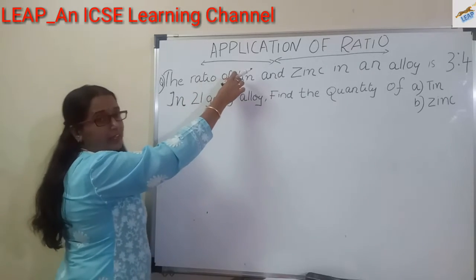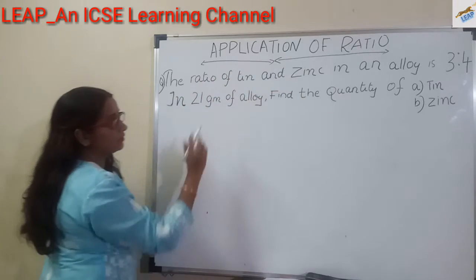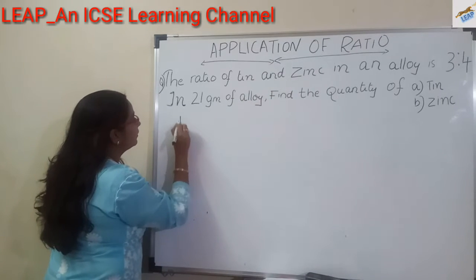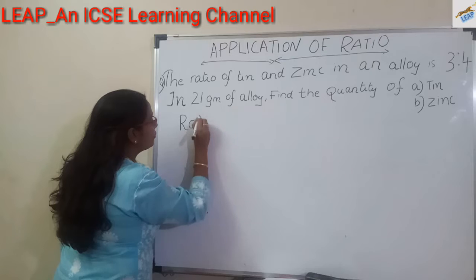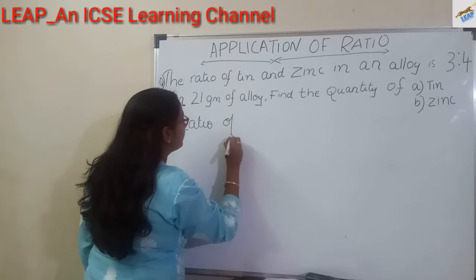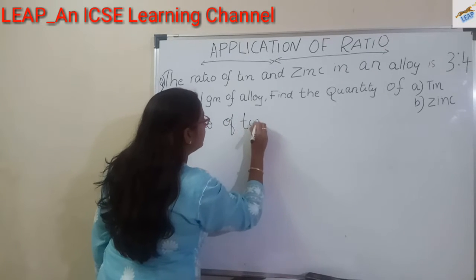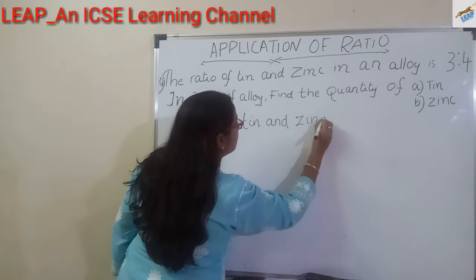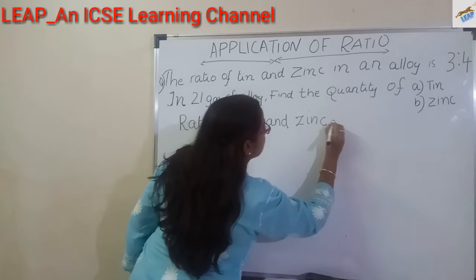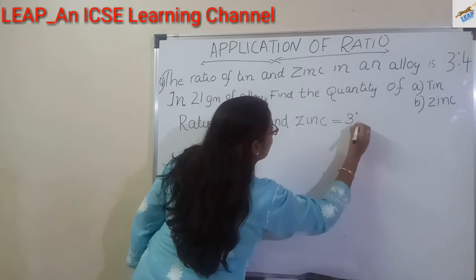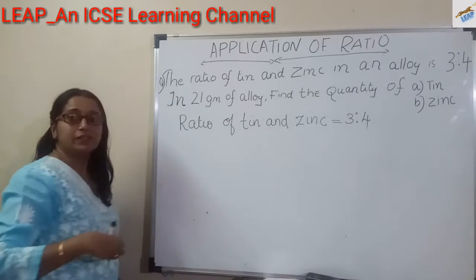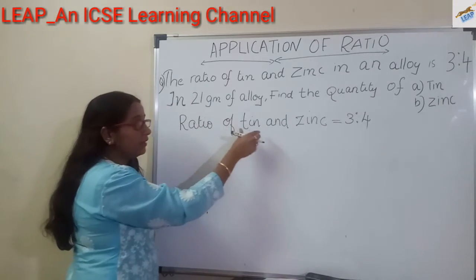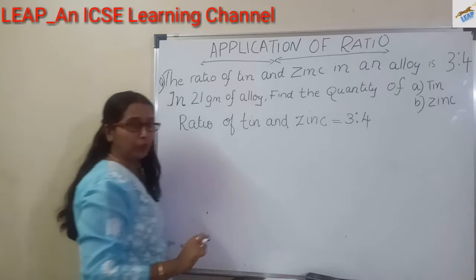First we have to write down the given data. Ratio of tin and zinc is equal to 3 is to 4. What is the meaning of this? That is, this is the relationship between tin and zinc in that particular alloy.